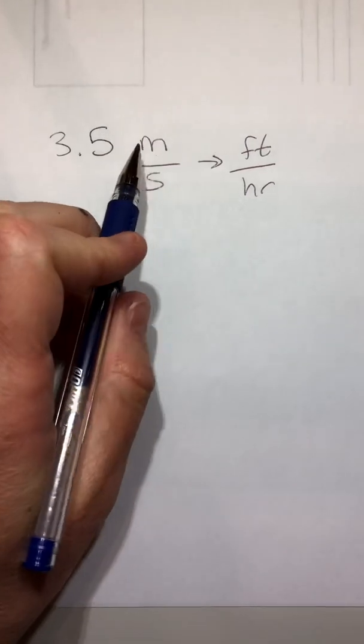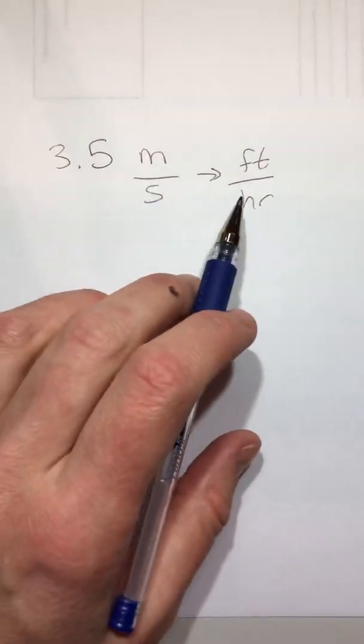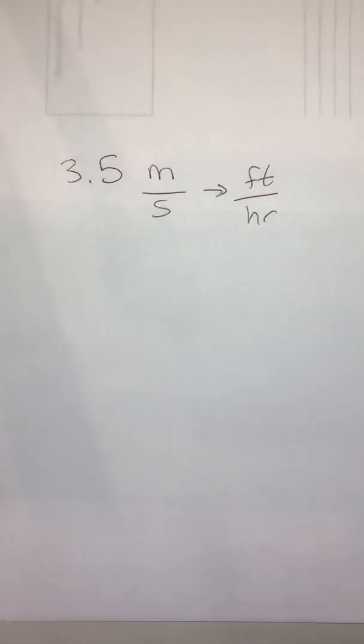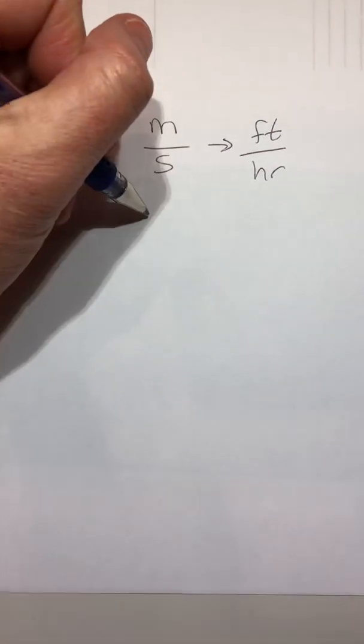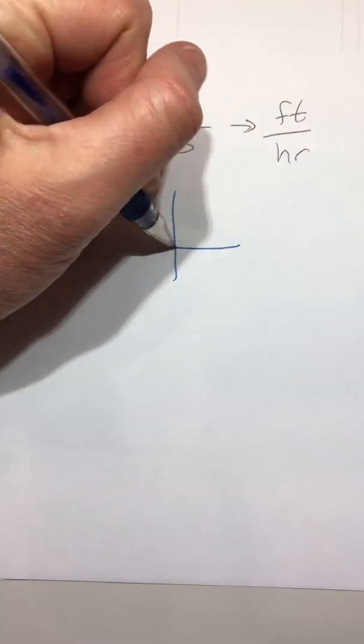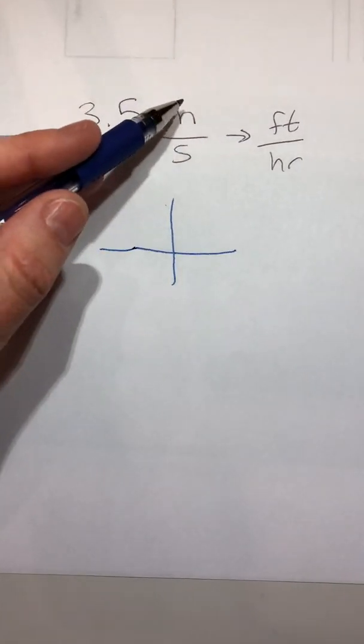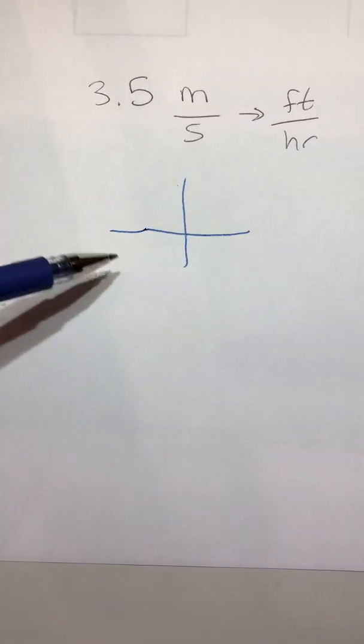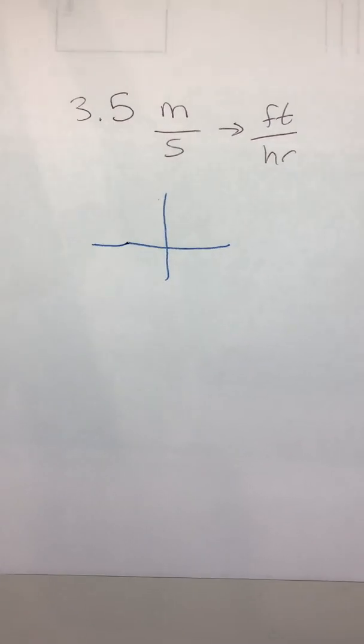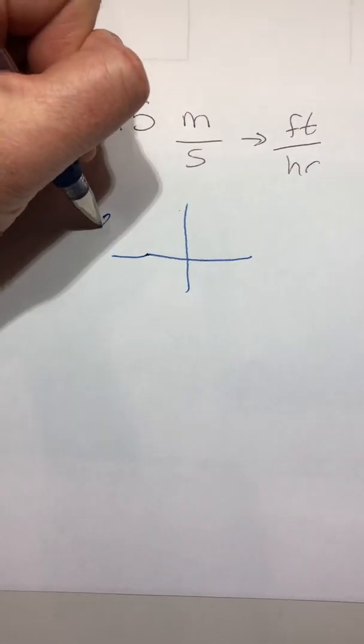We're going to convert each thing individually, so we'll convert the meters to the feet and the seconds to the hours without worrying about both of them together. Whenever we do dimensional analysis, always put only one unit in each box, never two. And when you have two units, it helps to start in the middle. So we're going to start with the thing we want to convert, in the middle of the page.